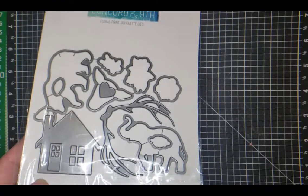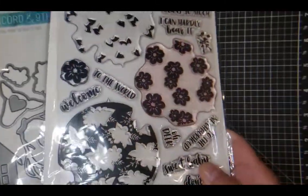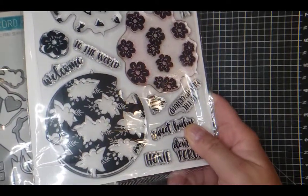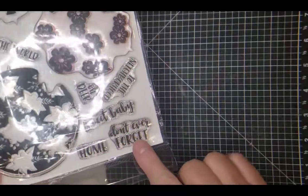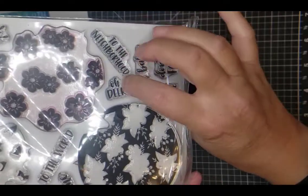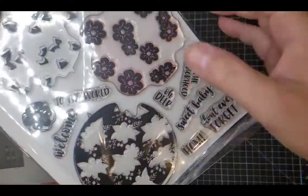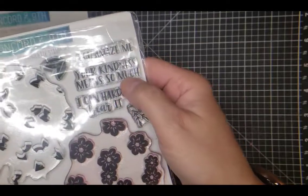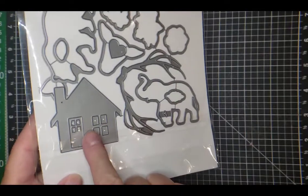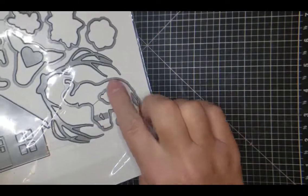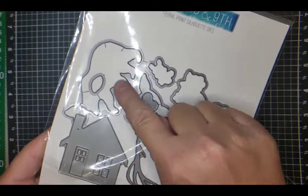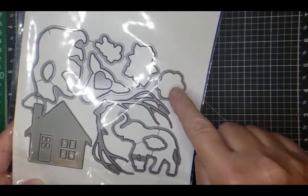Hello everybody, it's the Rocky Mountain Crafter here. Today I'm using the floral print silhouette stamps and dies set by Concord and 9th. There are cute little sayings in here like welcome to the neighborhood, oh dear welcome to the world for a baby card, and your kindness means so much I can hardly bear it. Here are the dies with the house, elephant, deer, and bear.